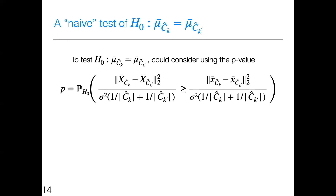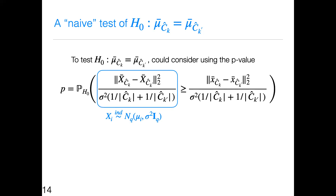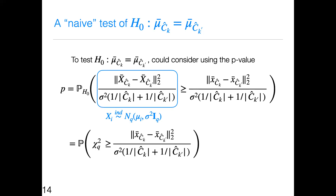C-hat-k came from the data little-x on the right-hand side, and on the left-hand side, c-hat-k still came from the data little-x. That's why there's going to be a problem. Under the null hypothesis, we'd like this p-value to follow a uniform 0-1 distribution, and it's not going to.